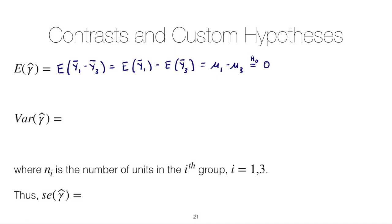So that'll be helpful when we write down our test statistic. Now what about the variance? The variance of gamma hat should be the variance of y1 bar minus y3 bar. Since we make an assumption that our data are independent, we can sum the individual variances. So this should be equal to the variance of y1 bar plus the variance of y3 bar.